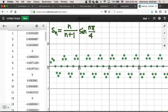I gave you the parent sequence, n over n plus 1 times sine of n pi over 4. This is a visualization of it.